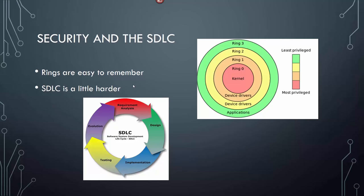For security in the SDLC, rings are easy to remember. Ring zero is your kernel — you can't access it; device drivers and applications cannot access it. You only need to learn ring zero and ring three. Ring three sits at the application level — that's where user access is. Ring zero is the kernel; the user can't get to the kernel. The SDLC steps: requirements analysis, design, implement, test, then evolve it — upgrade it, put patches on it, get user feedback. Commit that to memory.